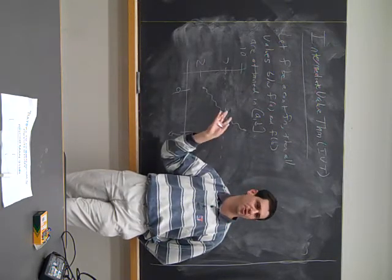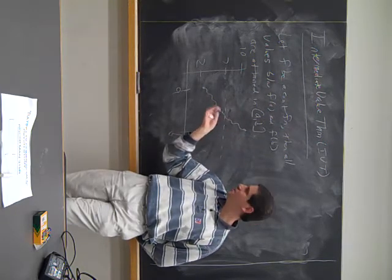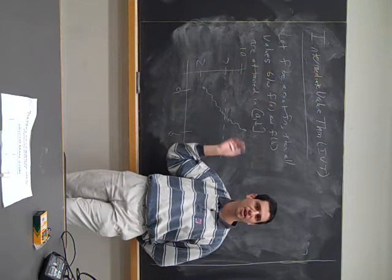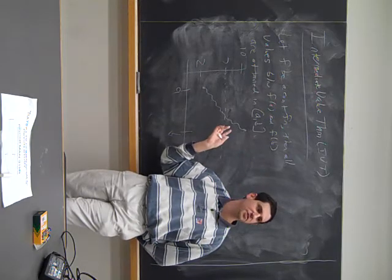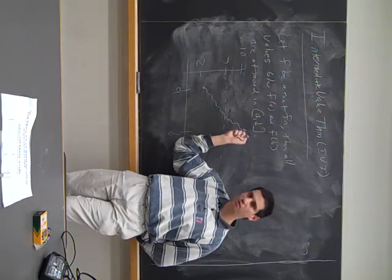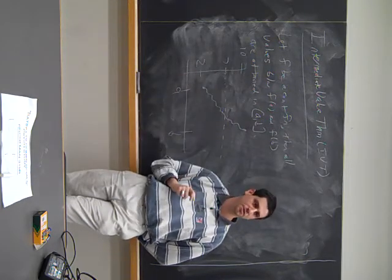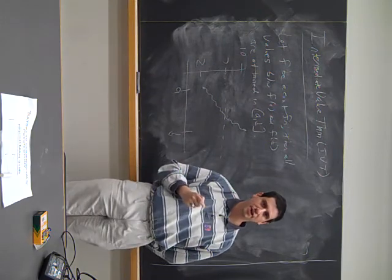This is a very hand-wavy proof. I'm drawing things on the board, I'm talking about Heisenberg compensators from Star Trek that don't exist. You can make this very rigorous in an analysis class. But the general principle should be clear. To get from point A to point B, if you're walking on a line, you have to go through all the intermediate points. That's the intermediate value theorem.